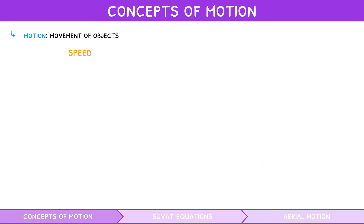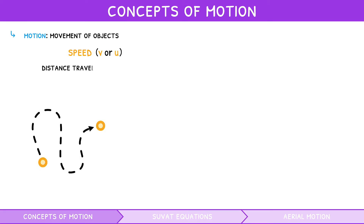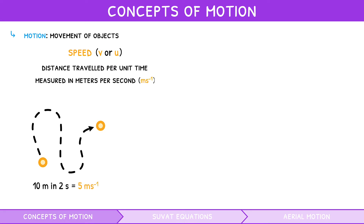Speed, denoted as final speed v or initial speed u, is defined as the distance travelled per unit time and is measured in metres per second. It is expressed using the equation v equals d divided by t, or u equals d divided by t.